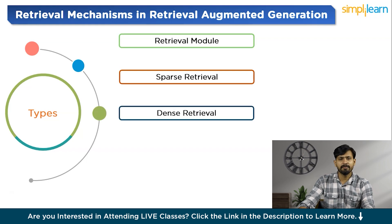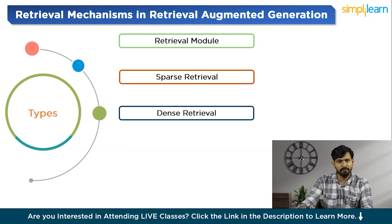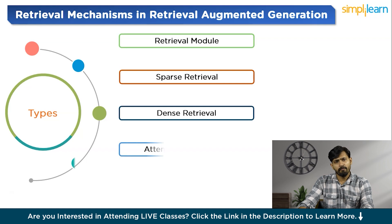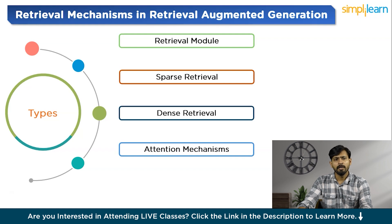Dense retrieval in RAG leverages neural network-based methods to map queries and documents into a shared embedding space, where similarity between them can be computed efficiently. This allows RAG to capture semantic relationships between queries and documents, enabling more accurate retrieval of relevant information. Attention mechanisms are also integrated into RAG's retrieval process to focus on the most salient parts of retrieved documents, dynamically weighting the importance of different passages based on the input query or context.